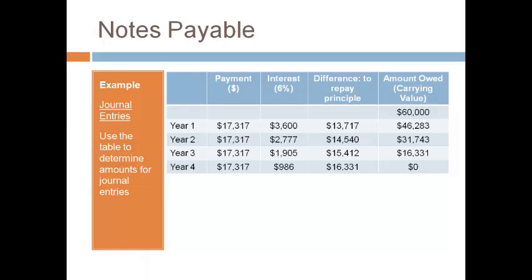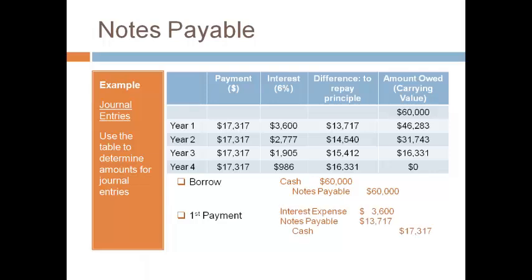You will use the amortization schedule to make journal entries. The amount borrowed begins the amortization schedule and is recorded as a liability to notes payable. Interest expense is recorded from the interest column. The debit, a reduction to notes payable, is taken from the difference column. A credit to cash is made for the payment amount. The debits and credits are the same for the second, third, and fourth payments, with amounts changing to match each year on the amortization schedule.